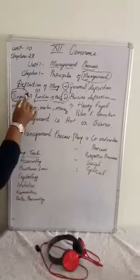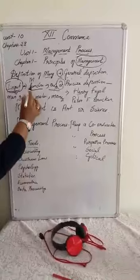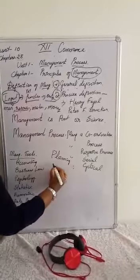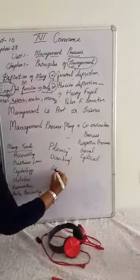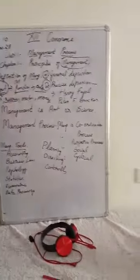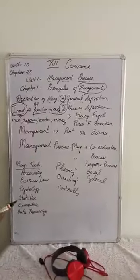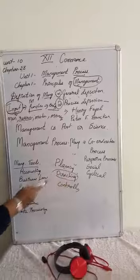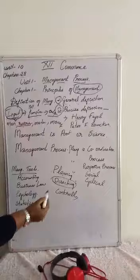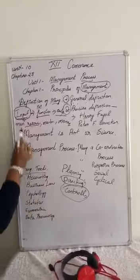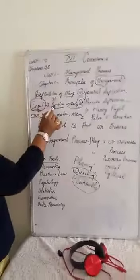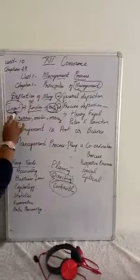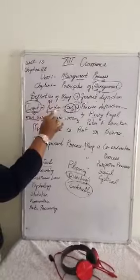To allocate these inputs, we have to use the management functions. The management functions are: planning, directing, and controlling. Planning means deciding in advance before starting any business. Directing means guiding the employees on how to do their work. Controlling means the manager has to control all the inputs in a proper way. When we do this properly, we get the desired output. That is why management is defined as the allocation of inputs by managerial functions to get the desired output.